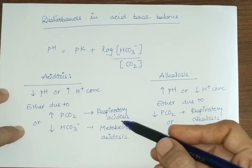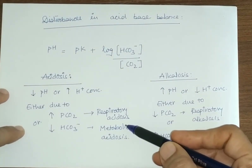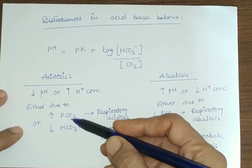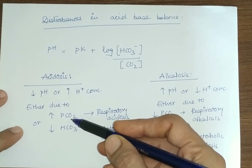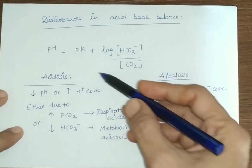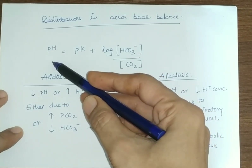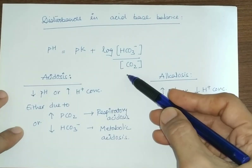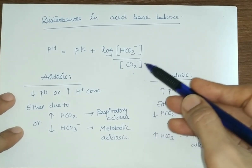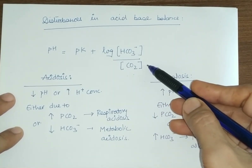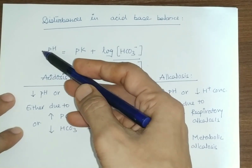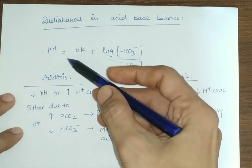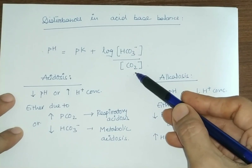Respiratory acidosis occurs when carbon dioxide concentration in the blood increases. As discussed in the Henderson-Hasselbalch equation, pH equals pK plus the logarithm of HCO3⁻ concentration divided by CO2 concentration. So when CO2 concentration increases, pH decreases — this is known as respiratory acidosis because the cause is elevated CO2.